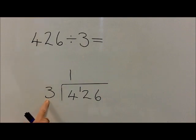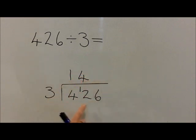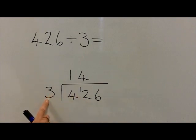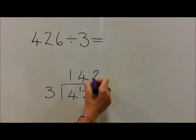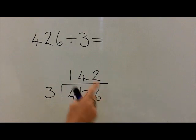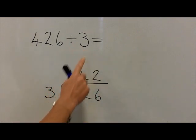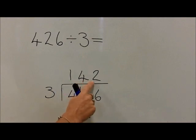We now ask the question how many 3's are in 12. Children should know that 4 times 3 is equal to 12. We've got nothing left over to carry. So we now ask the question how many 3's are in 6. Children should know that 2 times 3 is 6, so there's nothing left over as a remainder. Therefore, 426 divided by 3 is equal to 142.